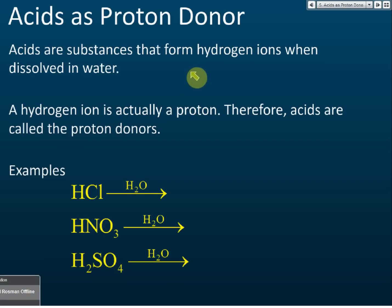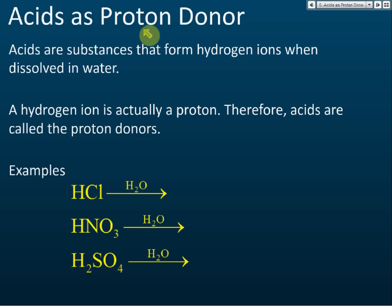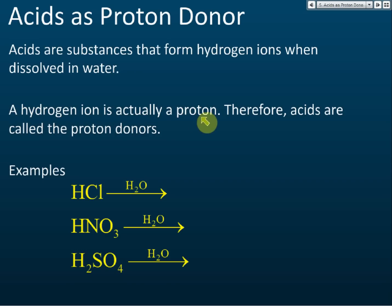Acids are called proton donors. First, we need to understand why. Acids are substances that form hydrogen ions when dissolved in water. If a substance forms hydrogen ions when dissolved in water, it is an acid. A hydrogen ion is actually a proton, and that is what we need to understand.